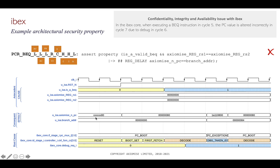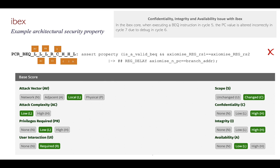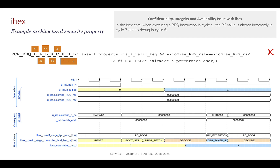This property fails in IBEX because of a bizarre security issue impacting confidentiality, integrity, and availability. What's happening is that in the controller, if the state machine is in the decoded state and you issue a debug, it causes the program counter to go into an exception state — not the next value, not the branch address. So you have unauthorized alteration and integrity issues, and the processor ends up in a deadlock, making it unavailable for further progress.